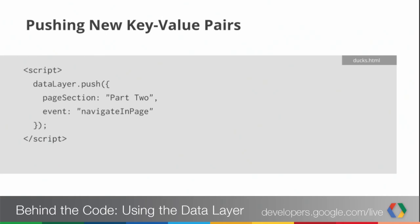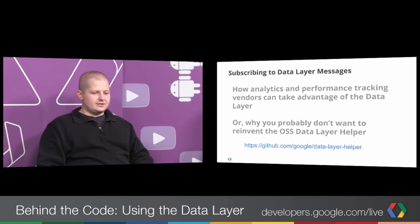We're using the data layer for two different types of things: one is a static page-level variable with a value you know when the page loads, and the other is for things happening in time — this event just happened, here are some associated values. Tag Manager is one such vendor, but there could be other solutions that also want to use the data layer. For each message, you pass in key-value pairs, and internally we keep a storage location for all those pairs, keeping the most recent value for any given key — it acts like a database at the page view level.